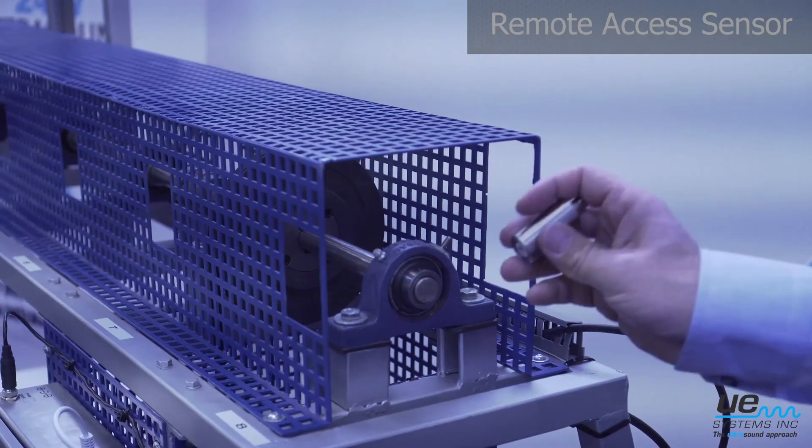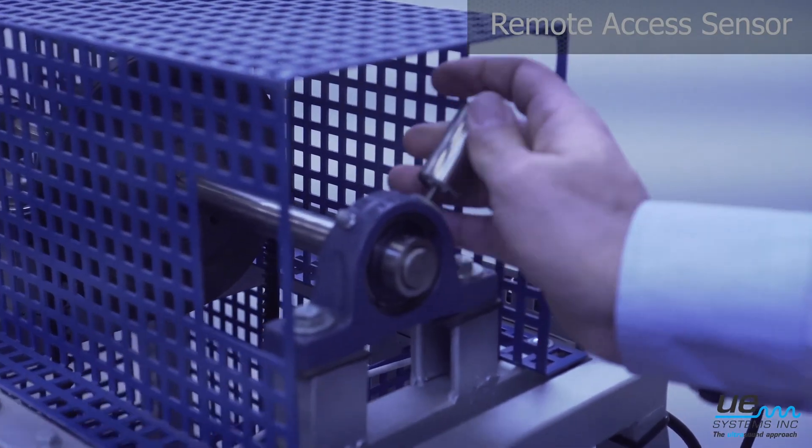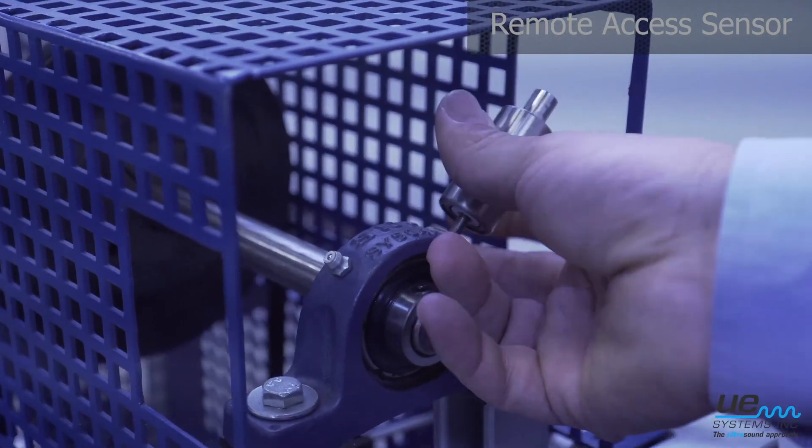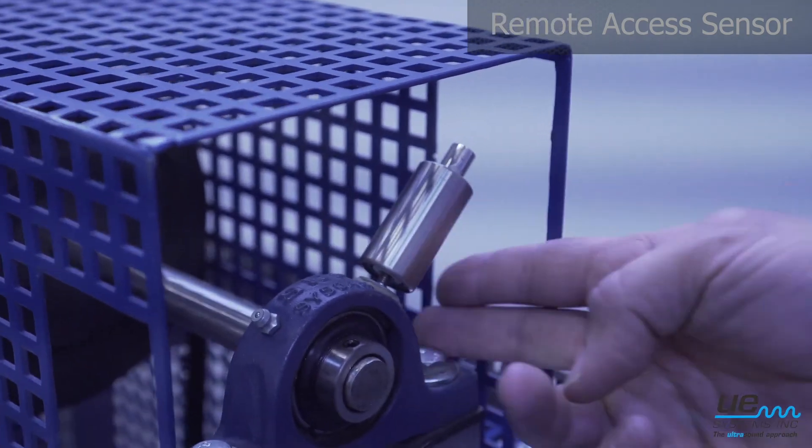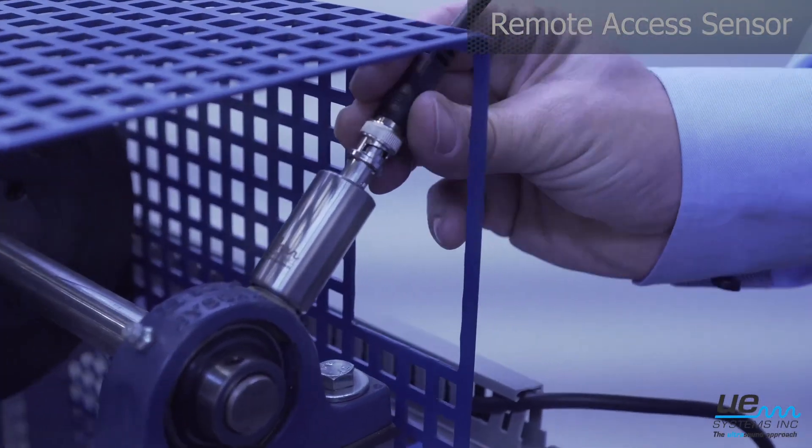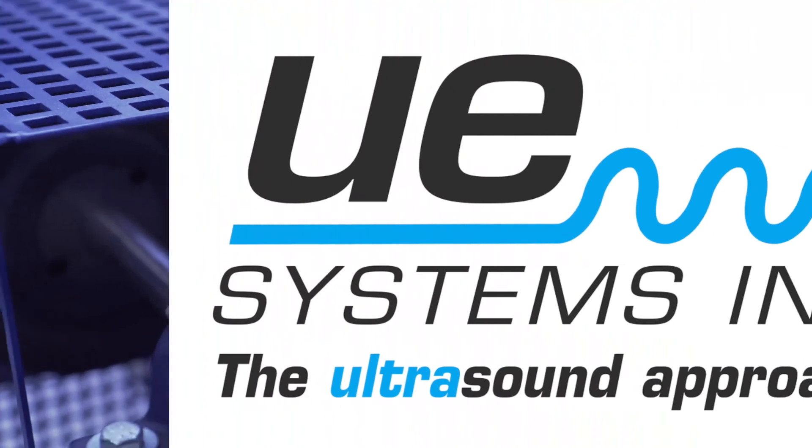The Forecast connects to UE System's remote access sensors to collect bearing data. Simply connect the cable to the Forecast box and it will continuously listen to the bearing.